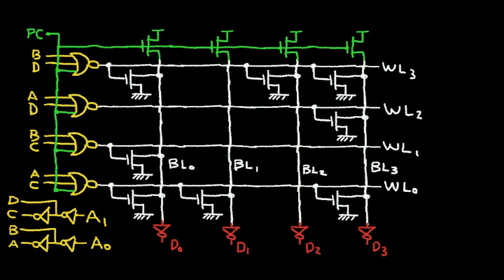So this particular ROM has four word lines. It has WL0, 1, 2, and 3. Now, there are four bit lines also. There's bit line 0, bit line 1, bit line 2, and bit line 3. And up at the top, shown in green, is a pre-charge circuit. And I have a decoder that's shown in yellow. And I have sense amplifying circuits that sense the data on the bit lines, shown at the bottom in red.